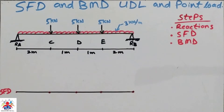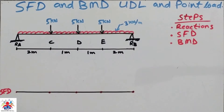Hello and welcome to my YouTube channel. In this video I am going to explain how to draw a shear force and bending moment diagram of a beam having UDL and a point load. As you can see in the diagram, we have three point loads and one UDL on the entire length of our beam, which is 3 kilonewton per meter. We have three steps to follow: reactions, shear force diagram, and bending moment diagram.